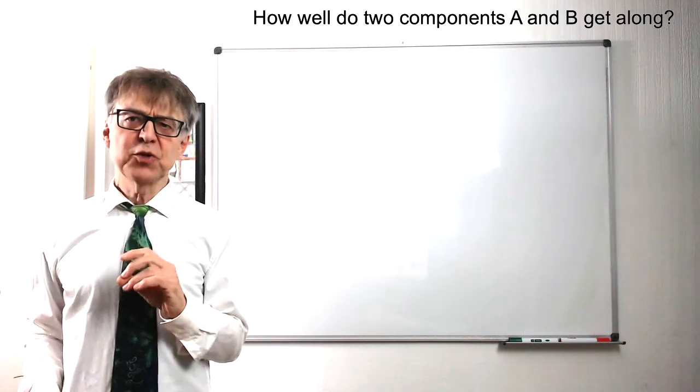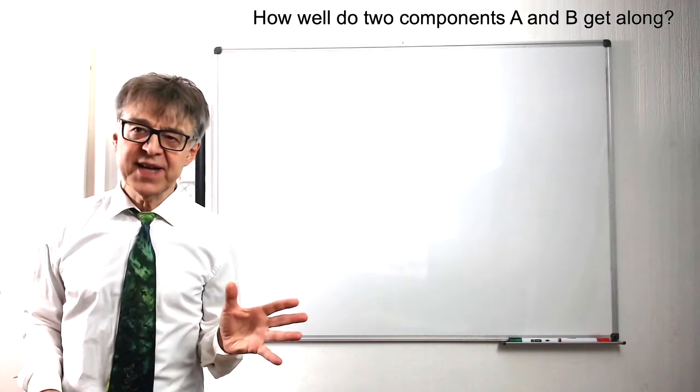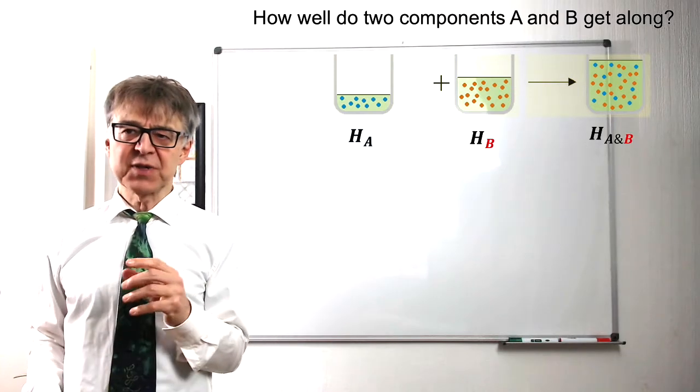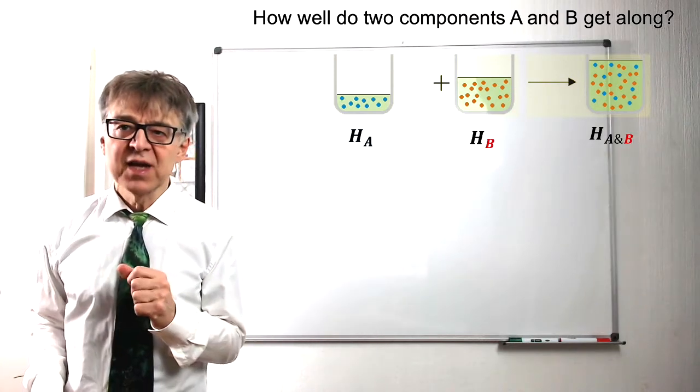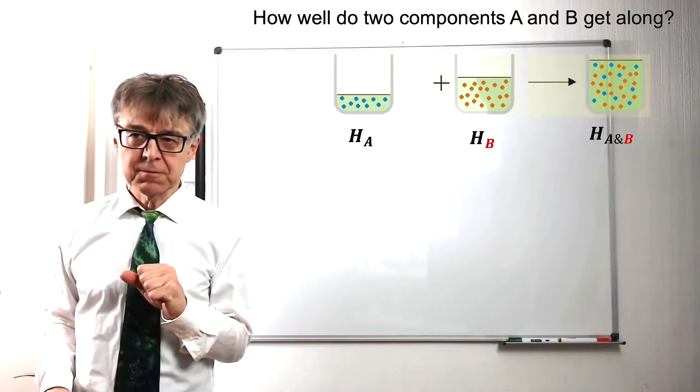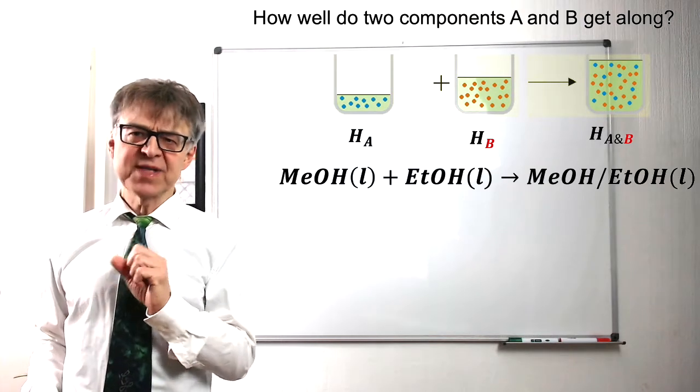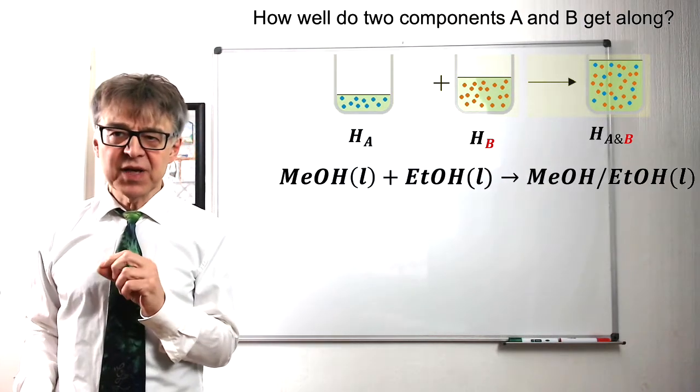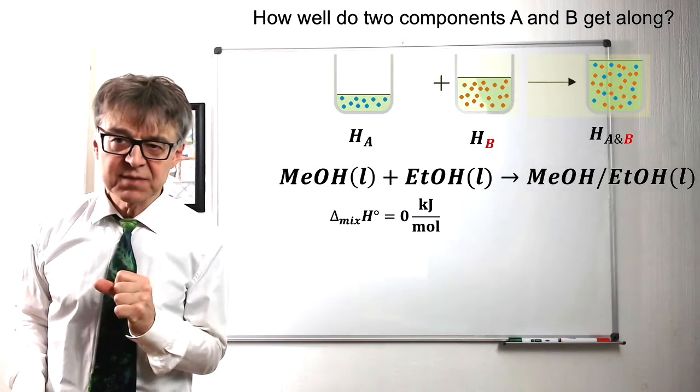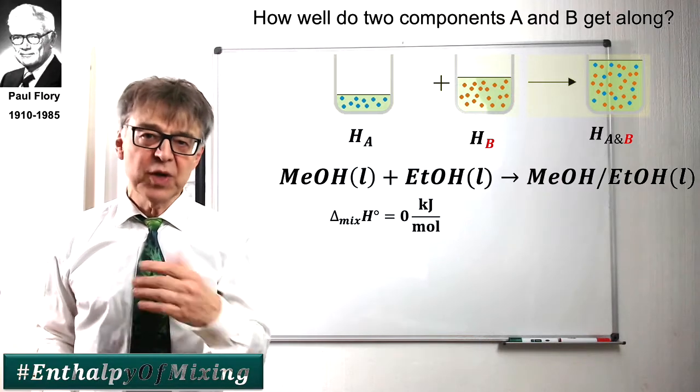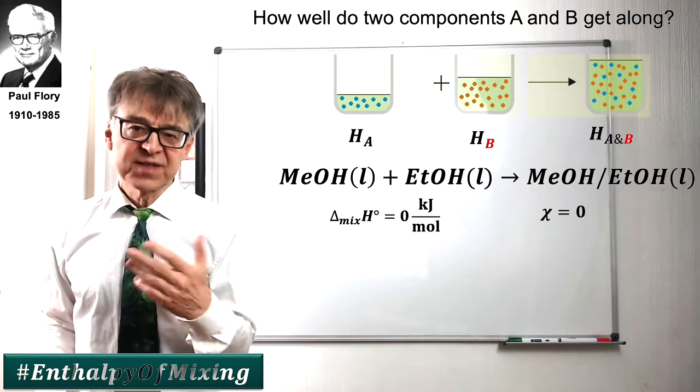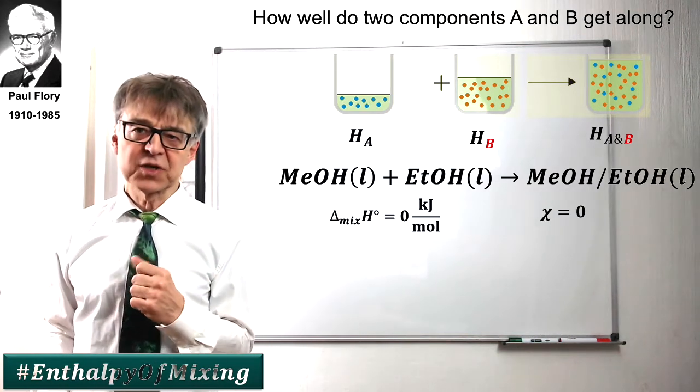A simple solution contains two components, solvent A and solute B. Depending on how the interactions between these components are, a distinction is made between ideal and non-ideal solutions. If we mix two chemically very similar components, the enthalpy of the mixture corresponds exactly to the enthalpy of the starting materials. There is no enthalpy of mixing, no heat of mixing. We are talking about ideal solutions, the so-called Flory-Huggins coefficient chi equals 0.